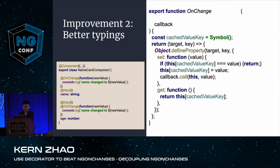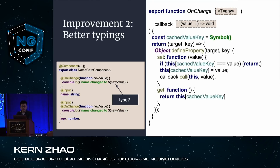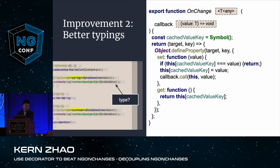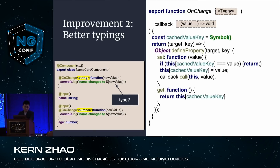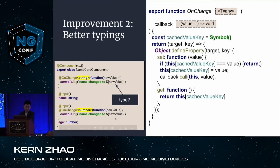My second improvement is better typing. The current problem is that TypeScript doesn't know the type of the new value. To solve this, we add a generic type T to the onChange decorator and type the callback function to take one parameter of type T. So TypeScript knows the new value is a string for name and a number for age.